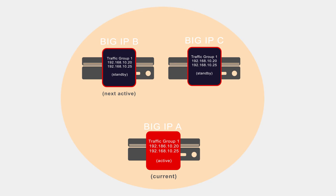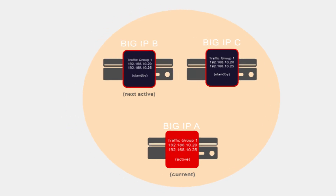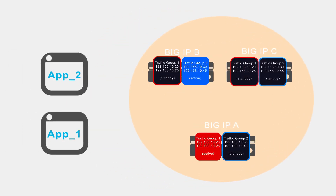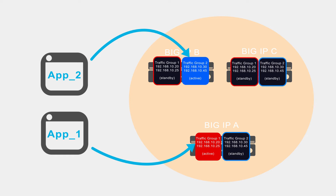To more fully use device resources, you can create additional traffic groups. Here we see two traffic groups: the default one for app 1 and a new traffic group for app 2. Each traffic group contains floating IP addresses unique to their application flows. We can see that each traffic group is active on a different device, although this is not a requirement. If the device capacity supports it, both traffic groups could be active on the same device, and we could create more floating traffic groups on other devices to process other traffic flows.